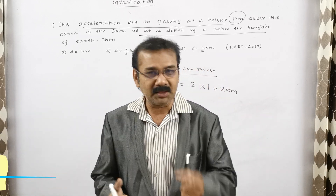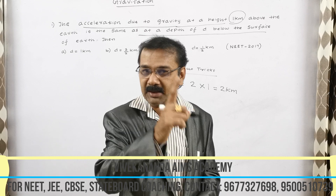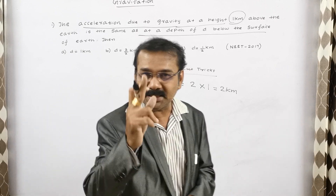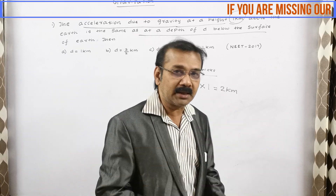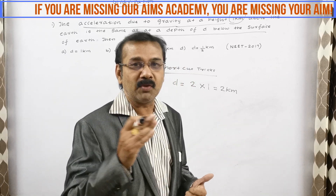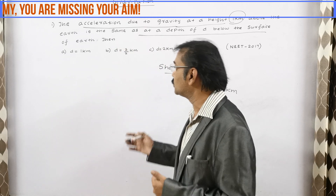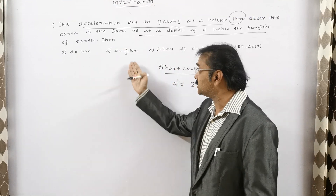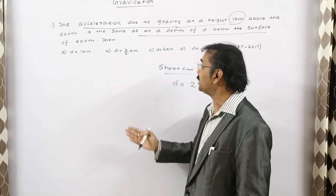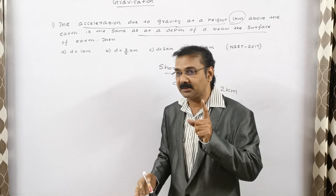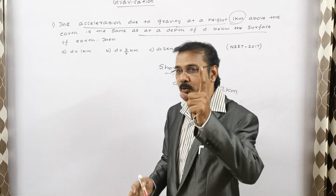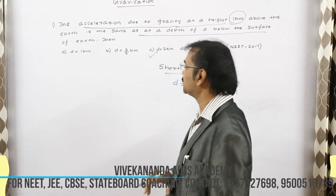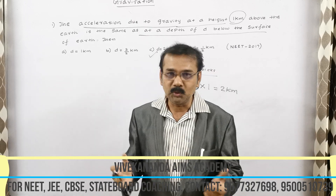We got the answer within a few seconds, without any formula and without any concept — in a fraction of a second. The answer is two kilometers. Looking at the options: option A is d equal to one kilometer, option B is d equal to three by two kilometers, option C is d equal to two kilometers. So the correct answer is option C: d is equal to two kilometers.